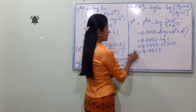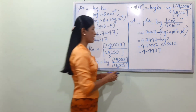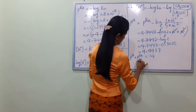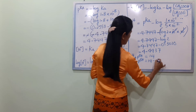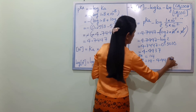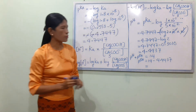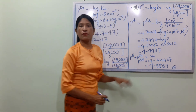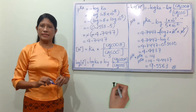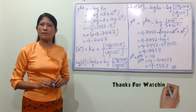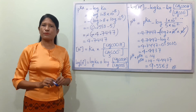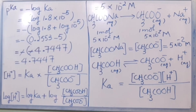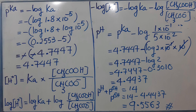Now let's find pOH. Since pH plus pOH equals 14, pOH equals 14 minus 4.4437, so pOH equals 9.5563. The answer to number 4 is pOH equals 9.5563. See you next lesson — bye-bye!